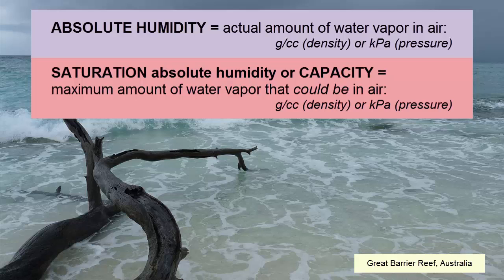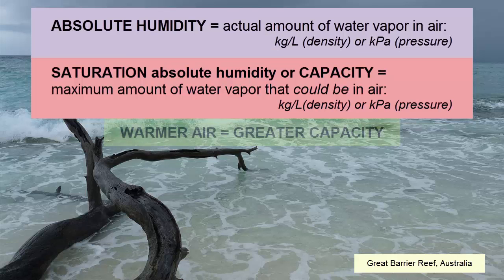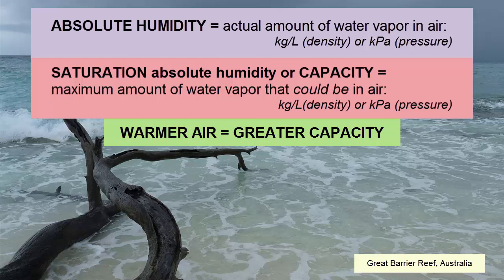Saturation absolute humidity, or capacity, is the absolute humidity a given parcel of air could have if it were saturated or at capacity. That number depends entirely on the temperature. The warmer the air, the more kinetic energy and hence velocity the molecules have, the more saturated it can be with water. The cooler the air, the slower the molecules, the less saturated it can be.